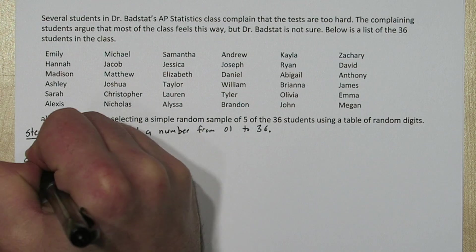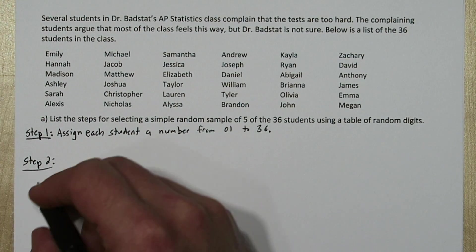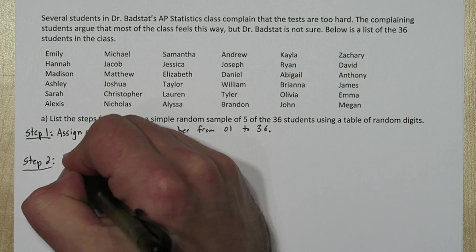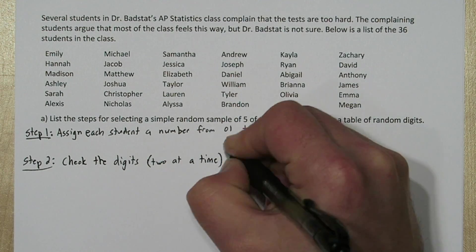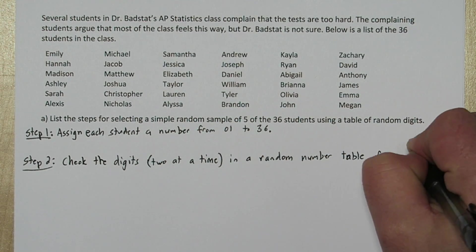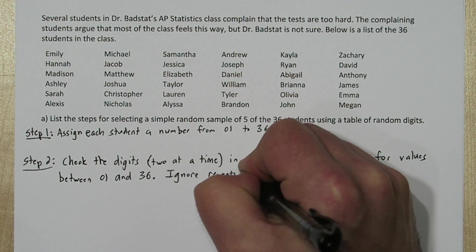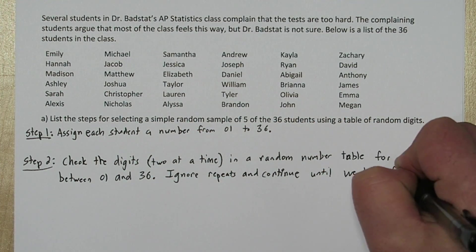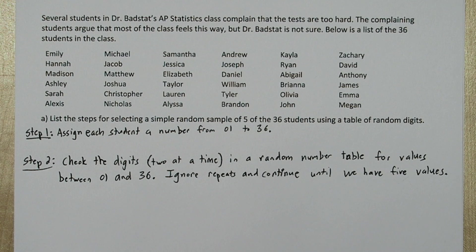This makes each number equally likely to be selected from our random number list. For step 2 we'll check the digits two at a time in a random number table for values between 01 and 36. We need to ignore repeats and continue the process until we have five unique values.